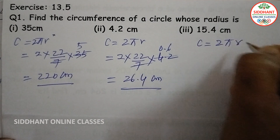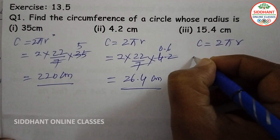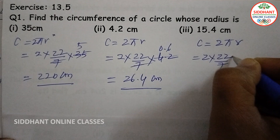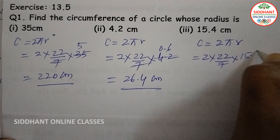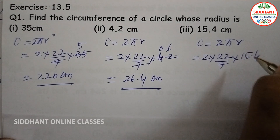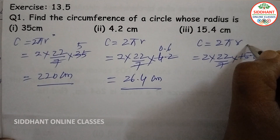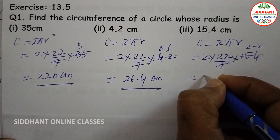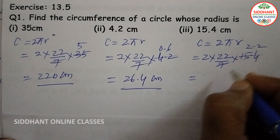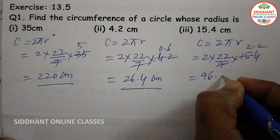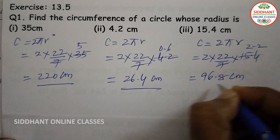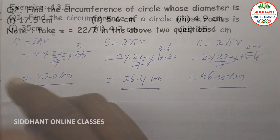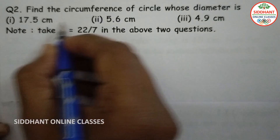Next, circumference equals 2 pi r, that will be 2 into 22/7 into 15.4. Here 15.4 divided by 7 gives 2.2, so when you multiply 22 into 2.2 we get 96.8 centimeters. That is the circumference.